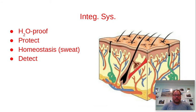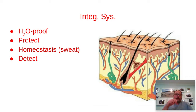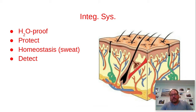We begin with the integumentary system — essentially your skin, along with associated glands, blood vessels, and nerve endings. Your skin is a protective coating on the outside of the body that prevents pathogens like bacteria, viruses, molds, and fungi from getting in. It also plays a homeostatic role by helping you cool down through sweating and changes in blood vessels. Additionally, you can detect what's going on outside the body through receptors in the skin for light touch, deep pressure, and pain.